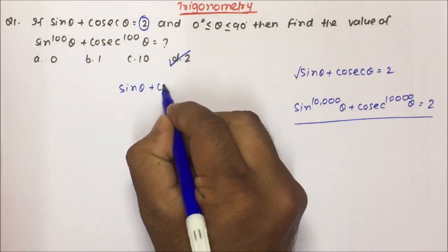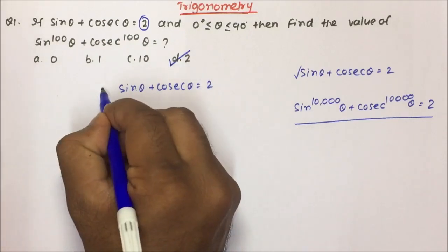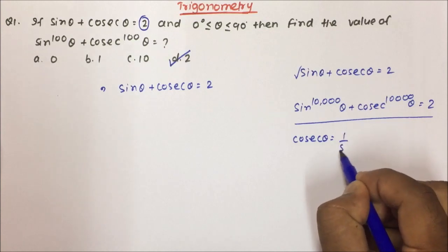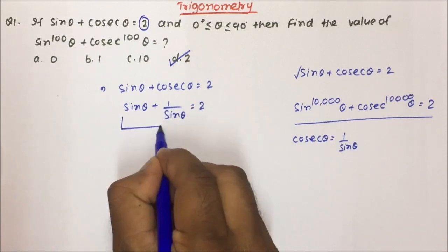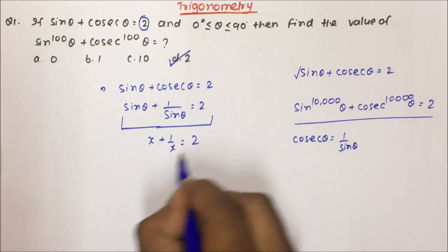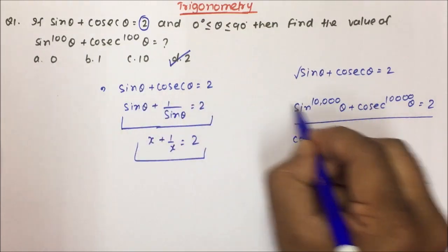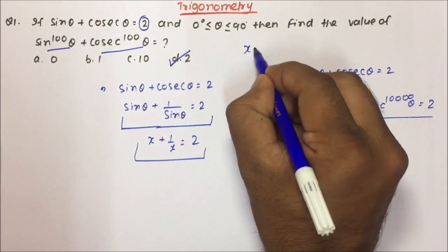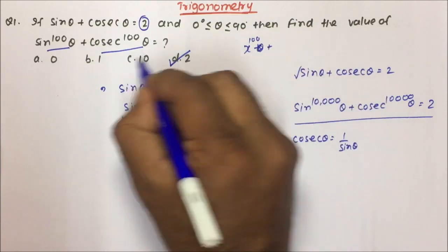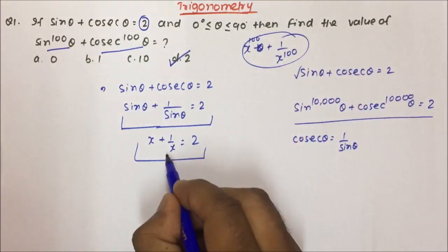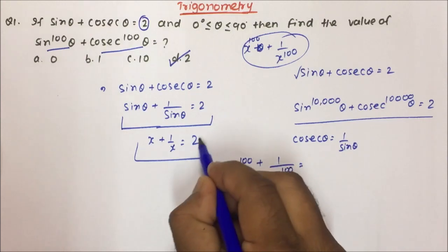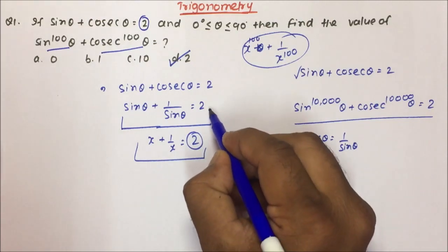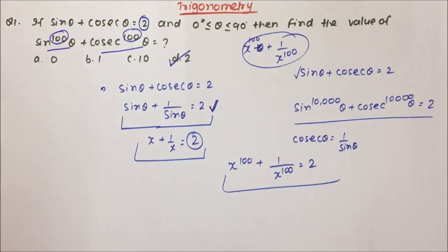sin θ + cosec θ = 2, and cosec θ = 1/sin θ, so sin θ + 1/sin θ = 2. If the form is x + 1/x = 2 and they ask x¹⁰⁰ + 1/x¹⁰⁰, it will be the same value. Two things to keep in mind: the form should be x + 1/x = 2, and the power should be the same — then the answer will be 2.